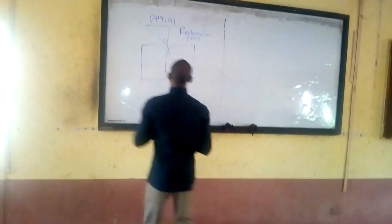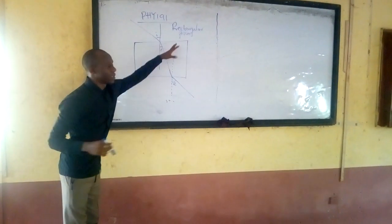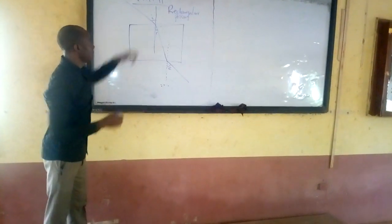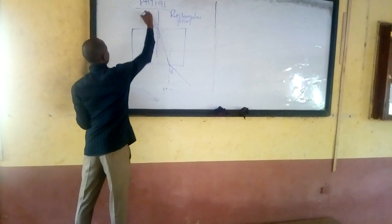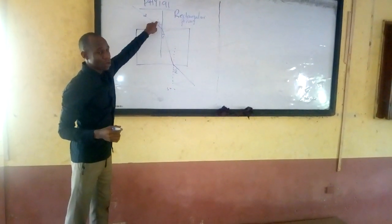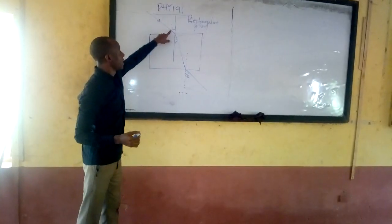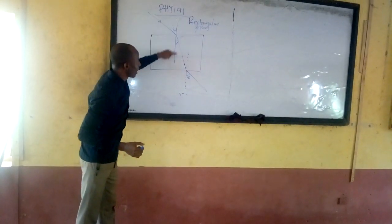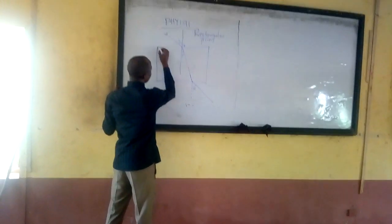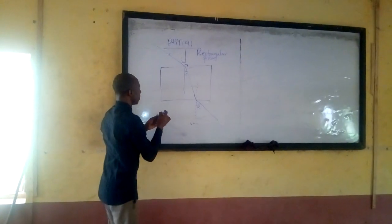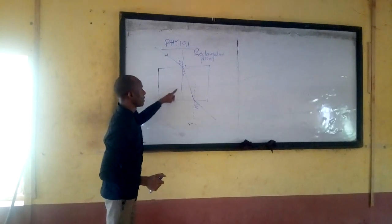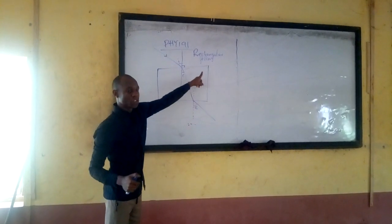Now let me explain some of the parameters. This is a rectangular glass prism. This line drawn here is called the incident ray. The angle here is called the angle of incidence. This line there is perpendicular to the plane of the prism. This is called the normal — a line that is perpendicular to the plane of the prism.